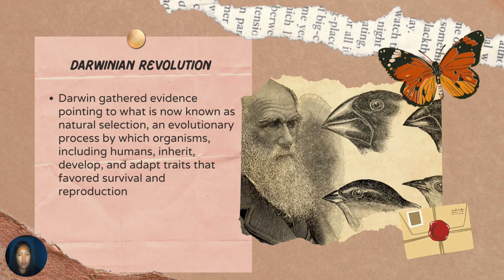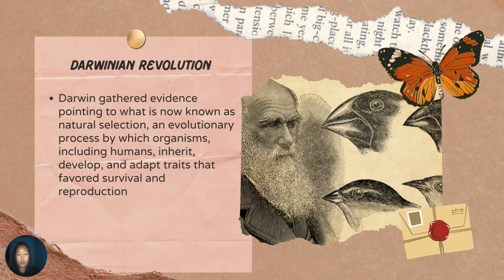According to Darwin, he believed in evolution, wherein organisms adapt to their environment in order to survive. It is the survival of the fittest — if you cannot adapt to your environment, you will not survive. Just like Nicolaus Copernicus, Darwin's theory of evolution also met with controversies and resistance.